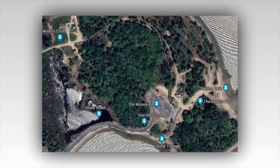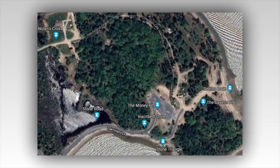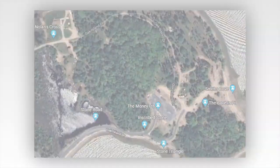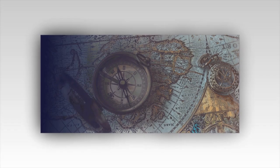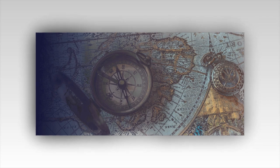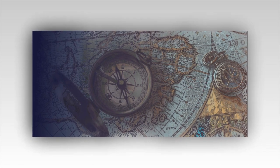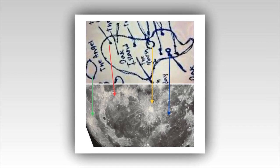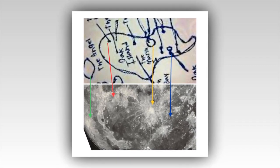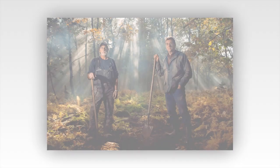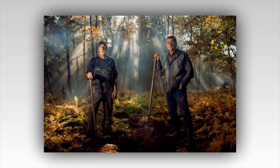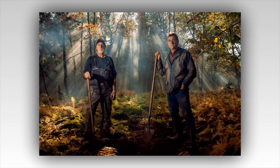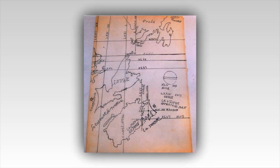The map is written in French and features several notable landmarks. The most prominent is labeled La Roche Fendou, which translates to 'the Split Rock.' This landmark has a real-world counterpart on Oak Island, lending some credence to the map's authenticity. Additionally, the map includes references to other locations such as the Flood Tunnel, the Treasure Vault, and the Anchor, each suggesting potential sites of interest that align with known features or speculated locations on the island.